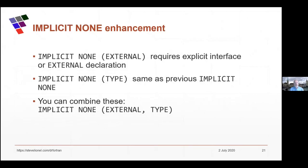Another change in Fortran 2018 is an enhancement to IMPLICIT NONE. You can now say IMPLICIT NONE EXTERNAL, which is something people have been asking for for a long time — a way to require an explicit interface for a routine, so no implicit interfaces. You can still say EXTERNAL to explicitly indicate you're calling an external routine. You can say IMPLICIT NONE TYPE, which is the same as the old IMPLICIT NONE. You can combine them, and compilers implementing these generally have a compile-line switch to force it on.